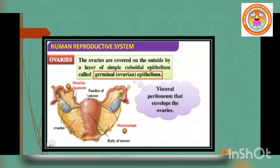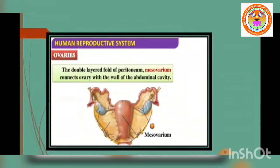The cortex appears dense and granular due to the presence of ovarian follicles in various stages of development. The medulla is a loose connective tissue with abundant blood vessels, lymphatic vessels and nerve fibers. The ovaries remain attached to the pelvic wall and the uterus by an ovarian ligament called mesovarium, a double-layered fold of peritoneum that connects the ovary with the wall of the abdominal cavity.